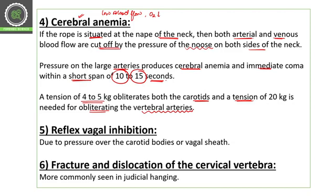If the rope is near the nape of the neck and both arterial and venous flow are stopped, within seconds the person goes into coma with no recovery. As the person becomes unconscious, more weight is applied, worsening the situation. The fourth cause is reflex vagal inhibition due to pressure over the carotid bodies and vagal sheath. The fifth cause is fracture and dislocation of cervical vertebra, common in judicial hanging where the person drops from a height.